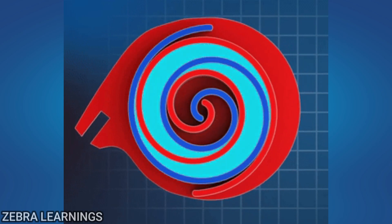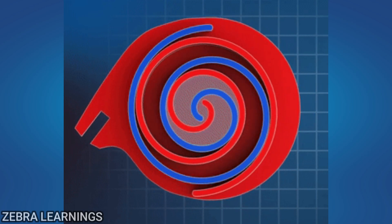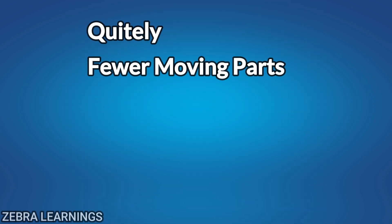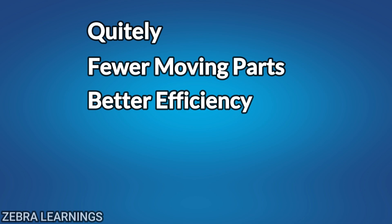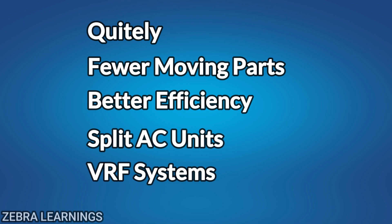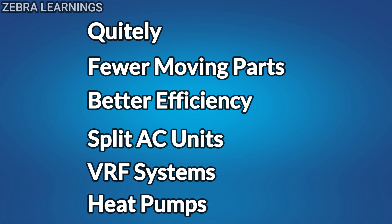Scroll compressors are popular because they operate quietly, have fewer moving parts, and offer better efficiency compared to piston-type compressors. You'll find them commonly in split AC units, VRF systems, and heat pumps, especially in both residential and commercial applications.